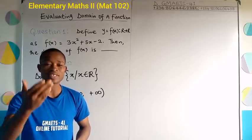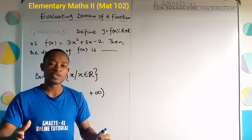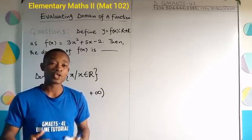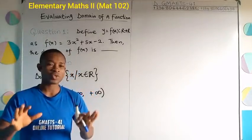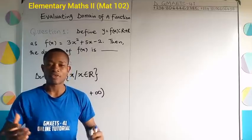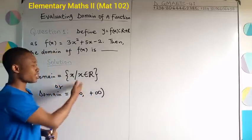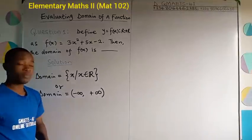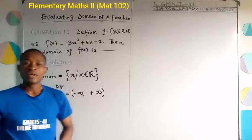This is true for all polynomial functions. It is not something you go solving to obtain — once you are given a polynomial function, the domain is simply the set of all real numbers. Just know how to quote that domain, whether using set-builder notation or bracket (interval) notation.